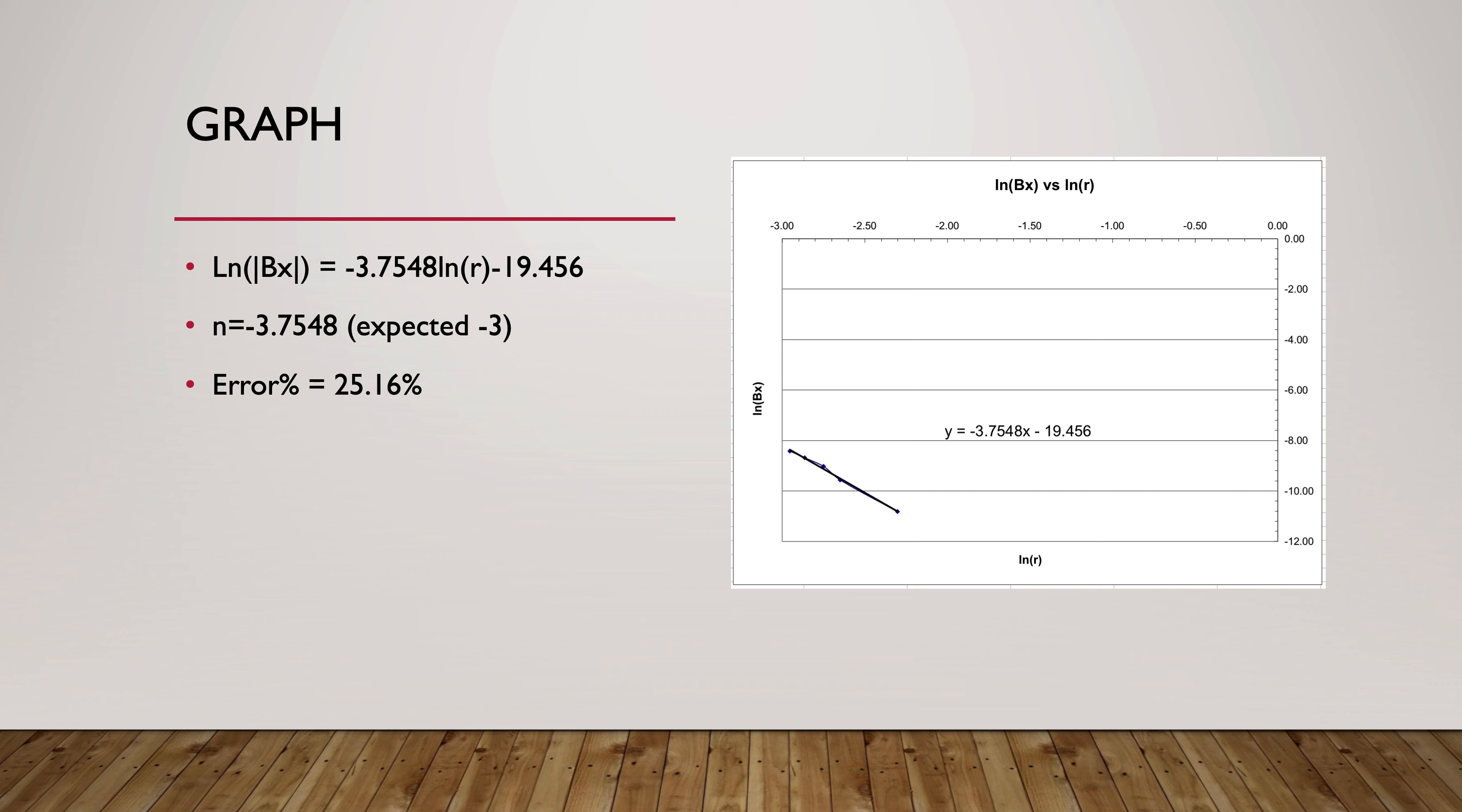What I got here is n equals -3.7548, and the expected value is -3, so my error is about 25%. This is an acceptable value considering all the facts I talked about before regarding how easily errors occur in this experiment.